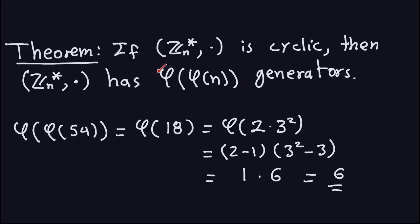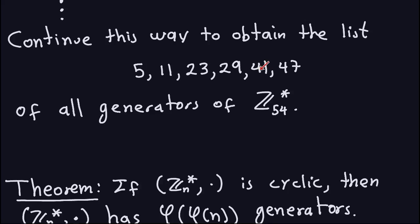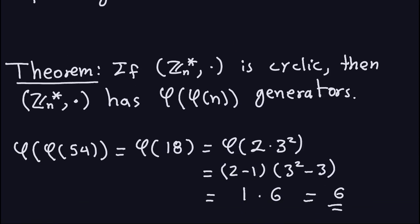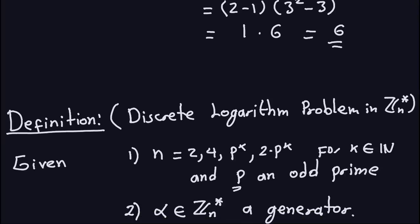A good thing to know about the number of generators is that this computation gives you a double-check that you are getting the exact number of generators. For example, if in this computation we got five generators, we would know we made a mistake somewhere, because there should be six. That's an important fact to know.